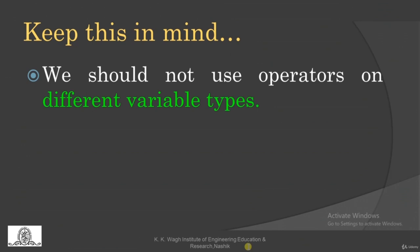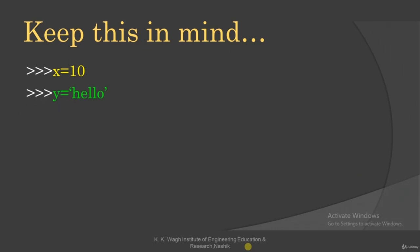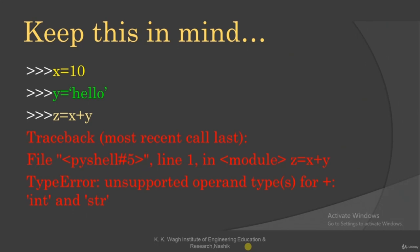One very important thing — we should not use operators on different variable types. For example, a and b can both be integers or both strings, but do not mix types. If x = 10 (integer) and y = 'hello' (string), and we write z = x + y, a type error will be displayed: 'unsupported operand type for plus' — because it is used for integer and string.